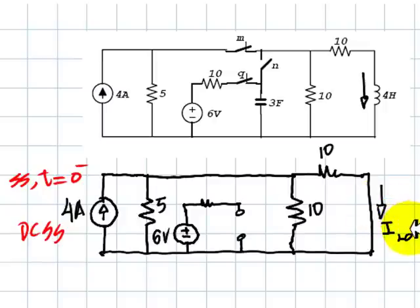Now we want to find what is that current in the inductor at t equals 0. This current at 0 minus, 0 plus, it's the same value, we know that. These 4 amps find a current divider between 5 ohms over here and the parallel of 10 and 10, which is another 5 ohms.